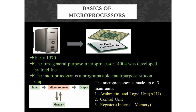The microprocessor is made up of three main units: the Arithmetic Logic Unit (ALU), the Control Unit, and Registers (also known as internal memory). The ALU is mainly used to perform arithmetic and logical instructions. Arithmetic instructions include addition, subtraction, multiplication, and division. Logical instructions include logical AND, logical OR, and logical NOT. For performing these types of operations, the ALU is used.